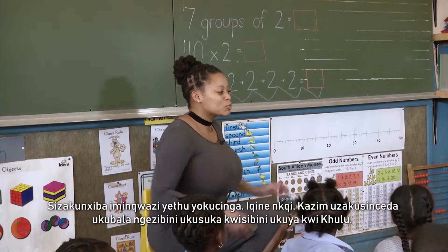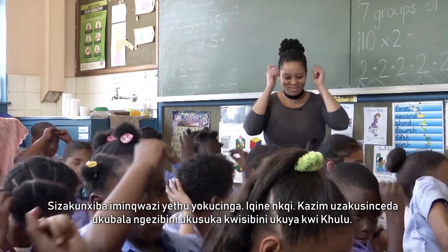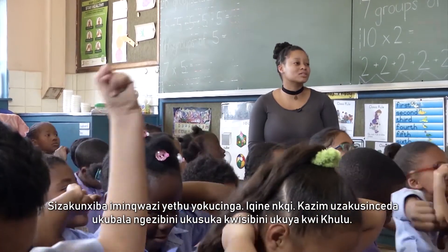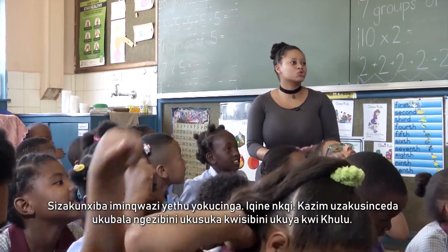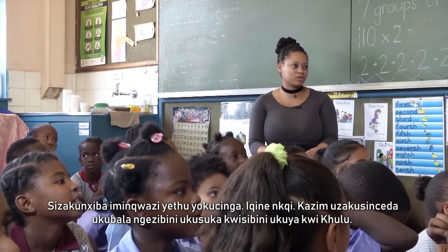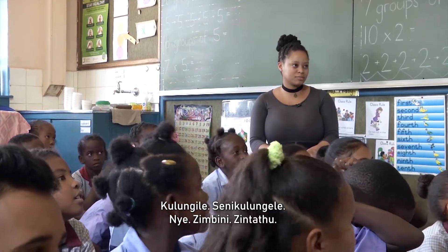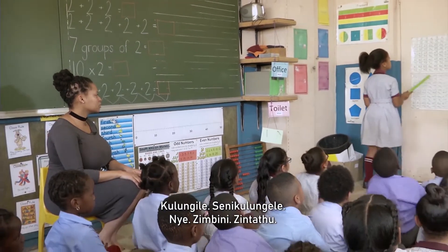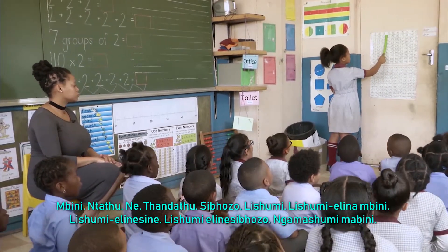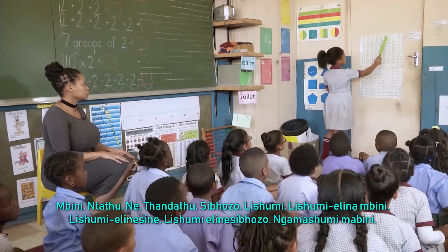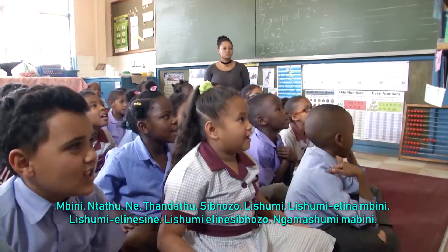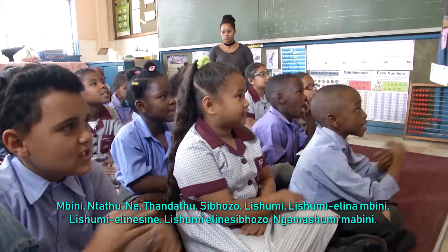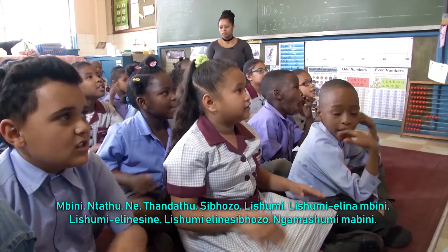We are going to put our thinking caps on, nice and tight. Kazen, you're going to help us count in twos from two to one hundred. Ready? Two, four, six, ten, twelve, fourteen, sixteen, eighteen, twenty.